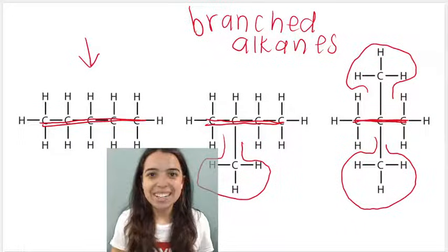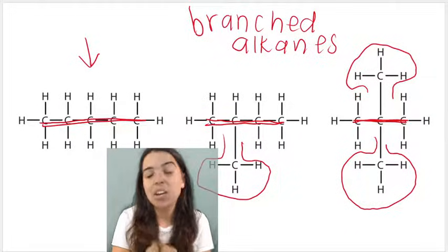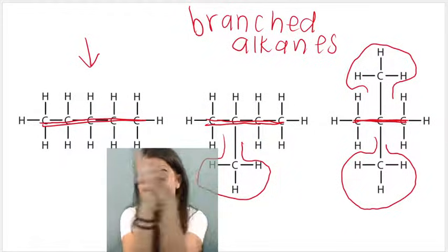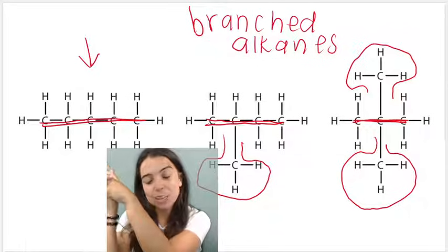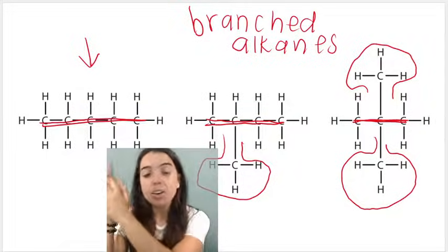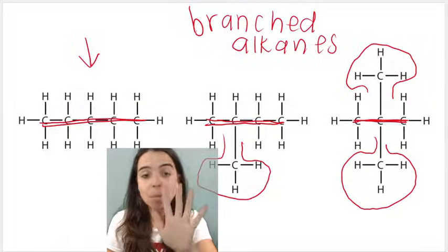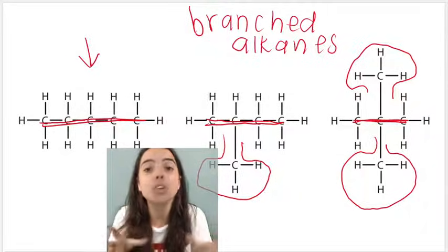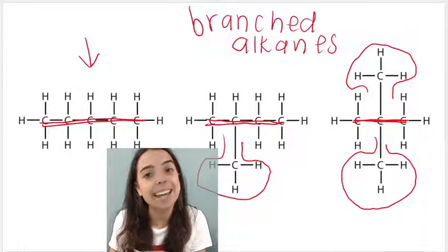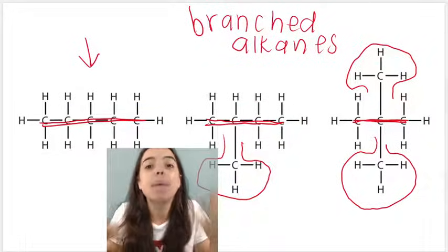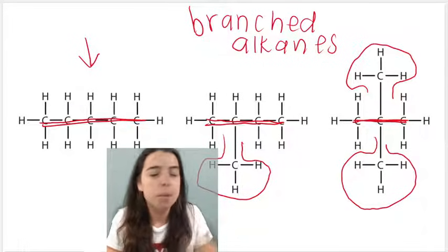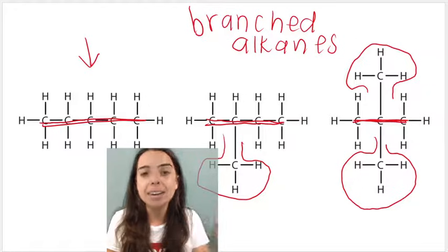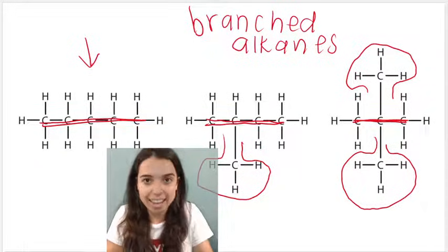Hello matrix! In the previous video we spoke about naming straight chain alkanes. For example, this one has five carbons so we know that its IUPAC name is pentane — pent because it's got five carbons in its main chain, and ane because it's an alkane.